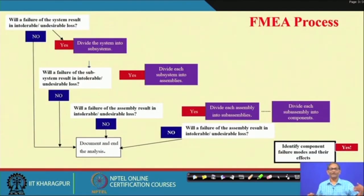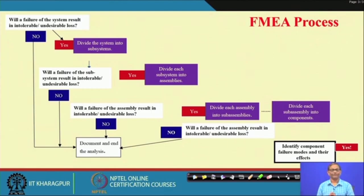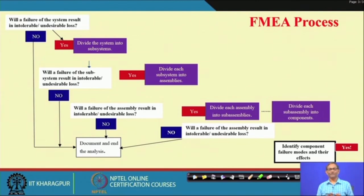There can be multiple failure modes — a large number of failure modes will be there. So, will you go for Failure Mode and Effect Analysis of all the failure modes? Or is there a way to decide which are the failure modes or component failure modes that are important to consider for detailed FMEA analysis?